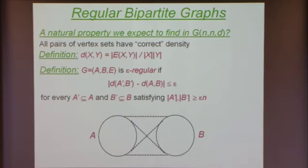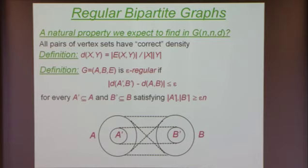They should deviate by at most epsilon. The picture you should have in mind is that if the bipartite graph has vertex sets A and B, and the density of edges between A and B is some real number D, then no matter how I pick a vertex set A' in A and B' in B, the density between them should be plus or minus D.